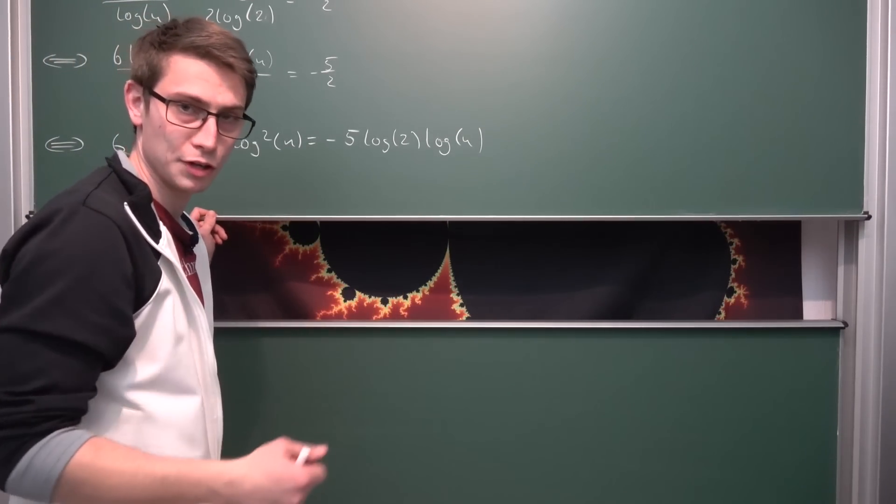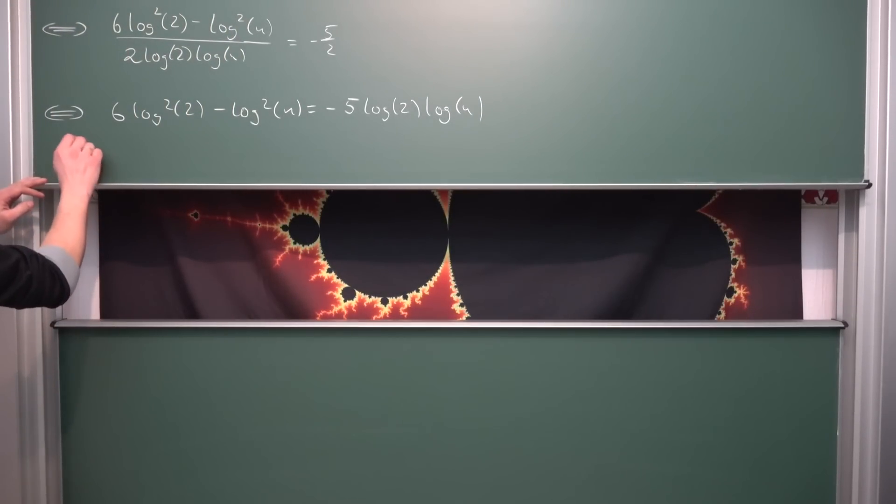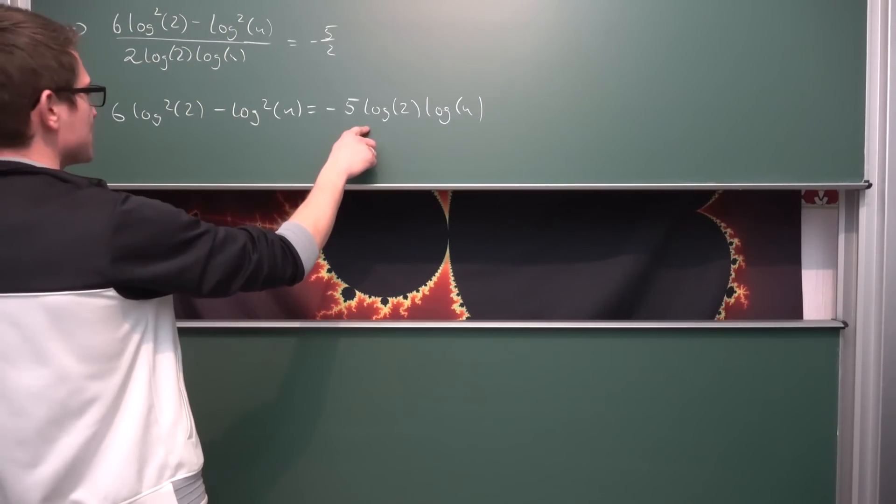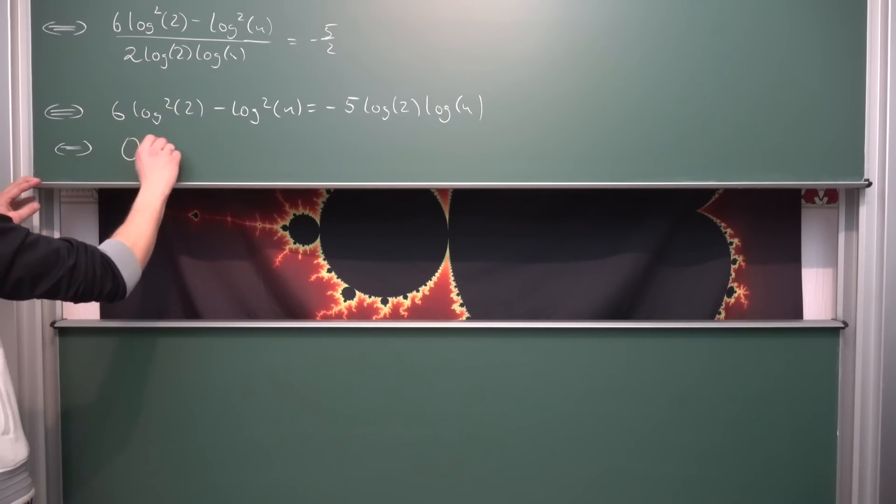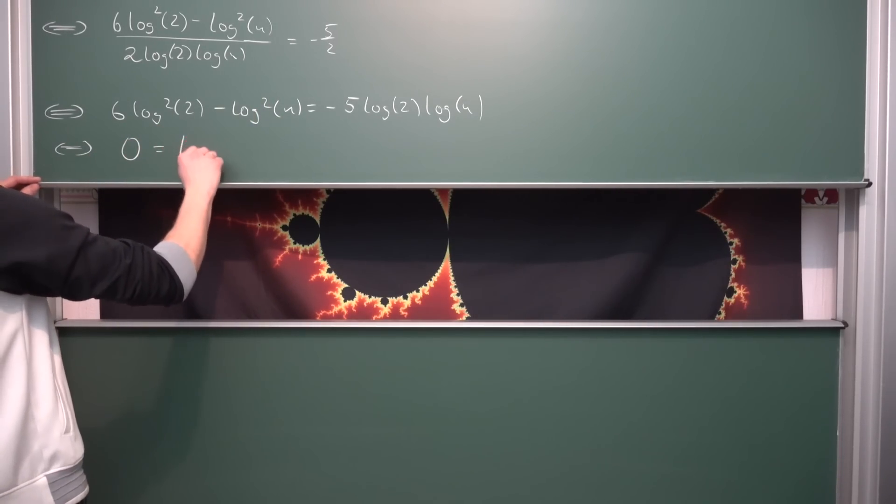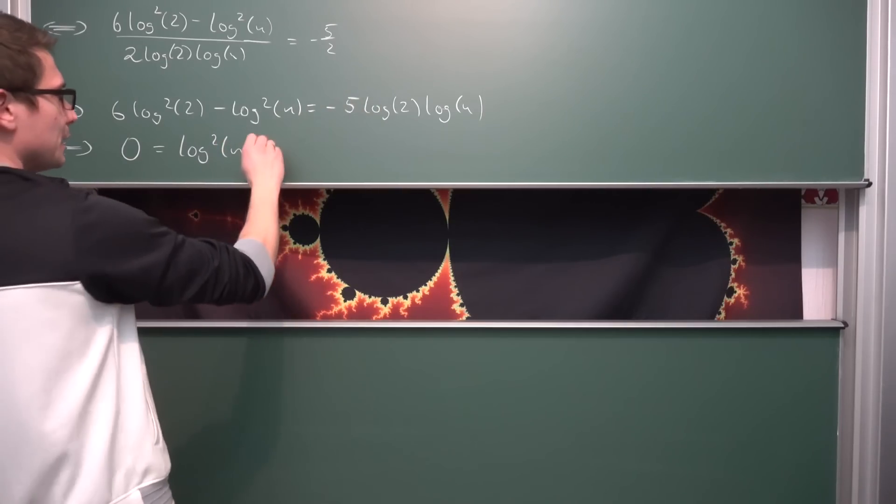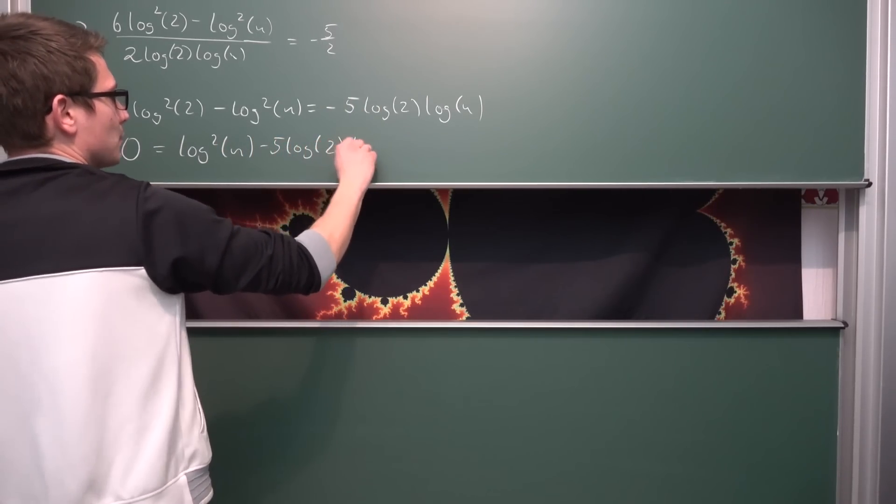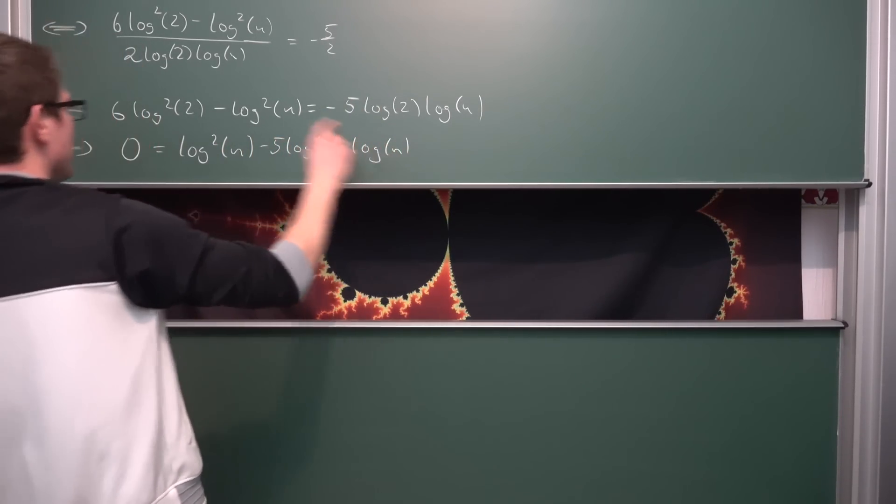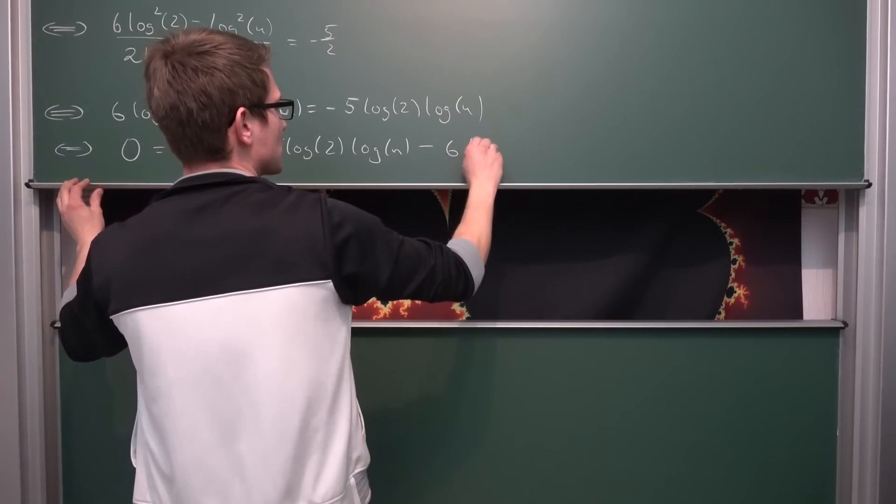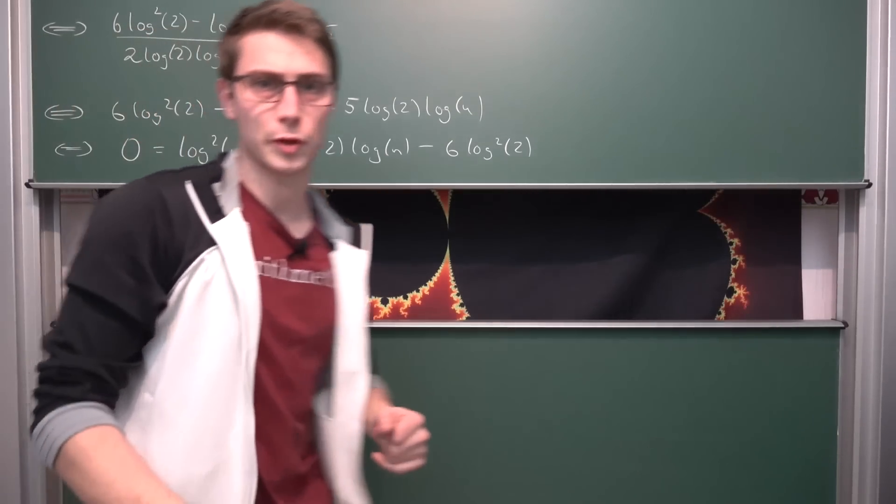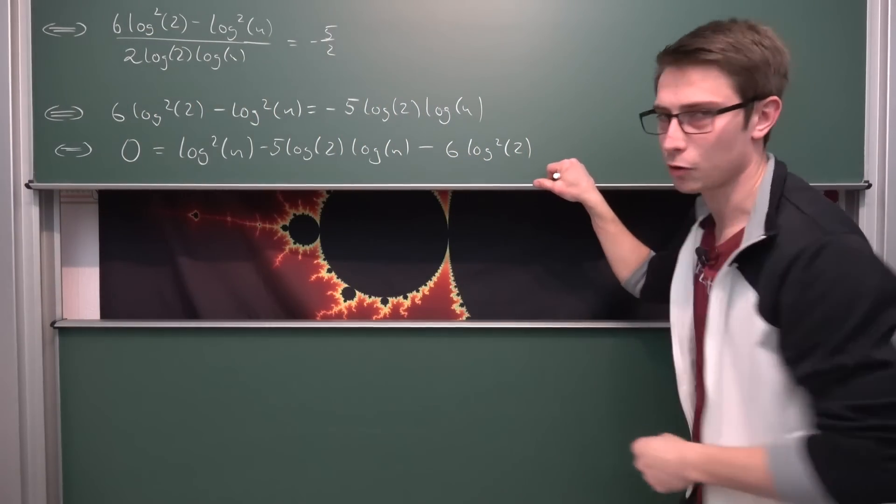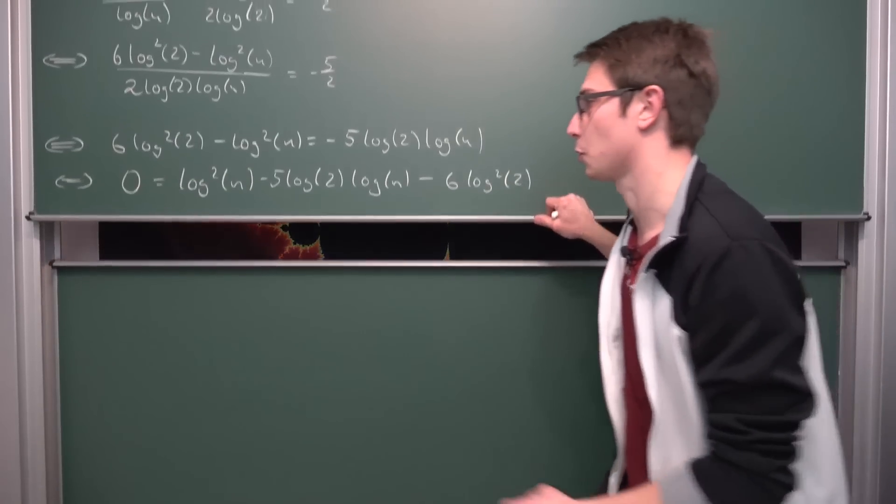Let's bring it into a form such that we can see clearly what the coefficients of the quadratic formula are going to be. We are going to bring this to the other side adding it. We are going to subtract this part on both sides giving us 0 is equal to the log squared of n minus 5 times the log of 2 times the log of n minus 6 times log squared of 2. Using the quadratic formula here in our log of n is going to give us two solutions for the log of n.